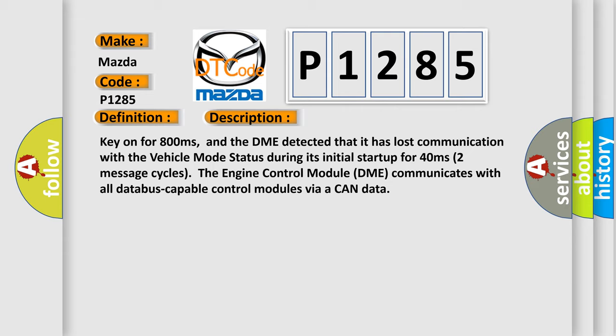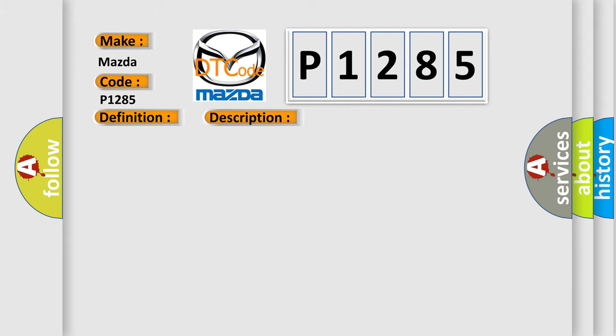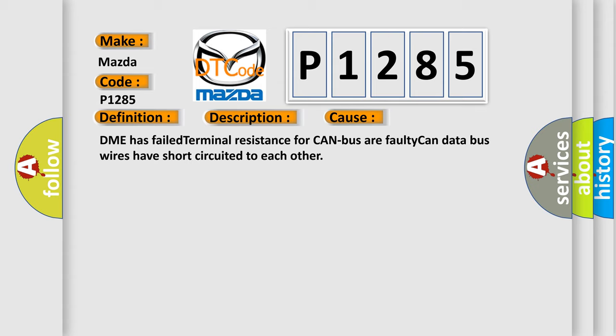The engine control module DME communicates with all database capable control modules via a CAN data. This diagnostic error occurs most often in these cases: DME has failed terminal resistance for CAN bus or faulty CAN data bus wires have short circuited to each other.